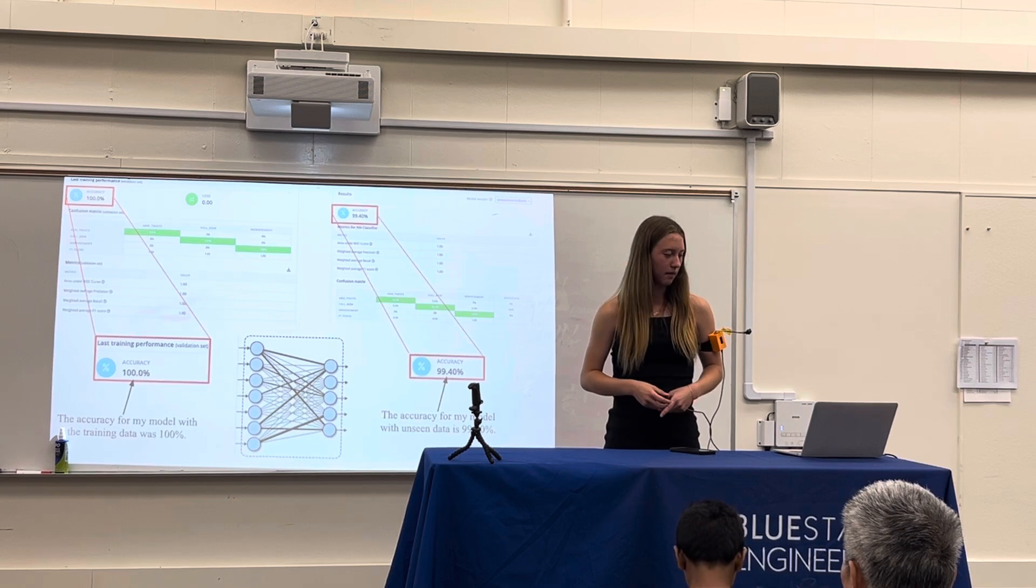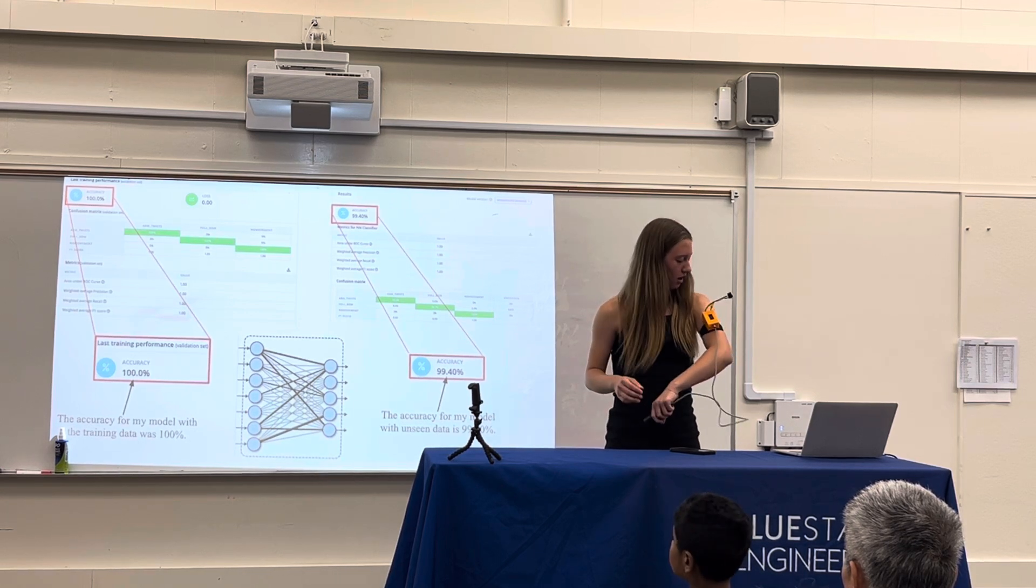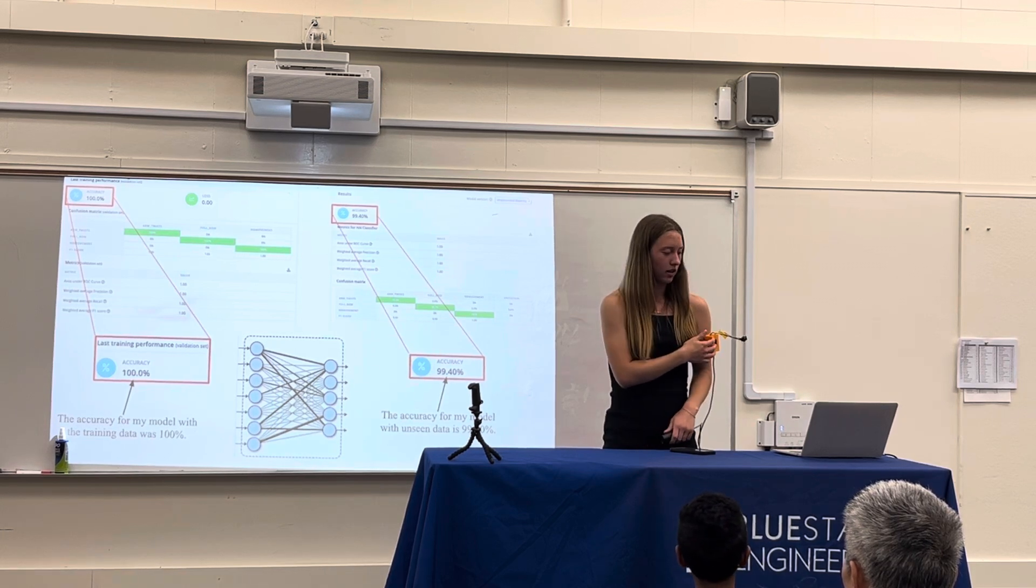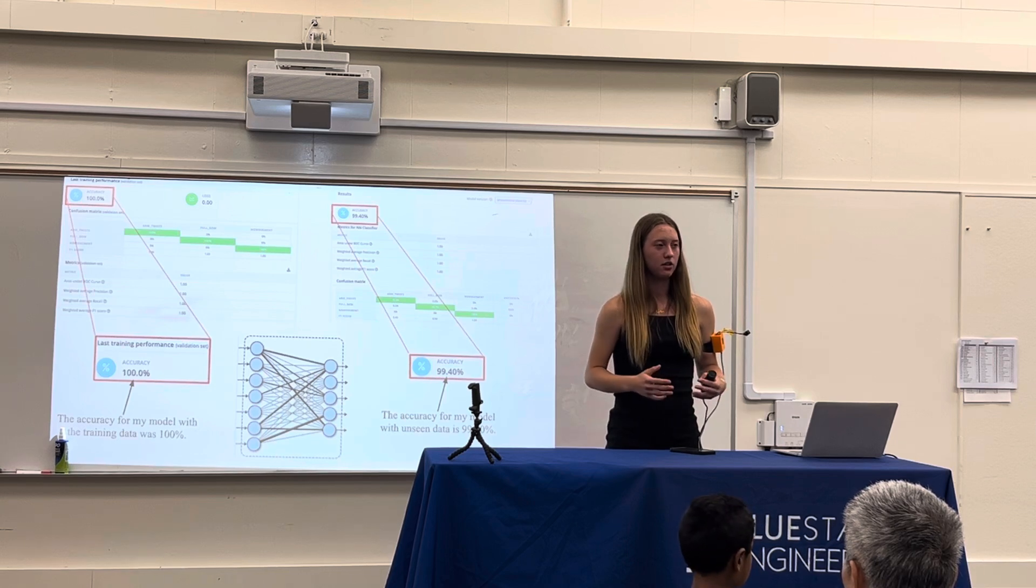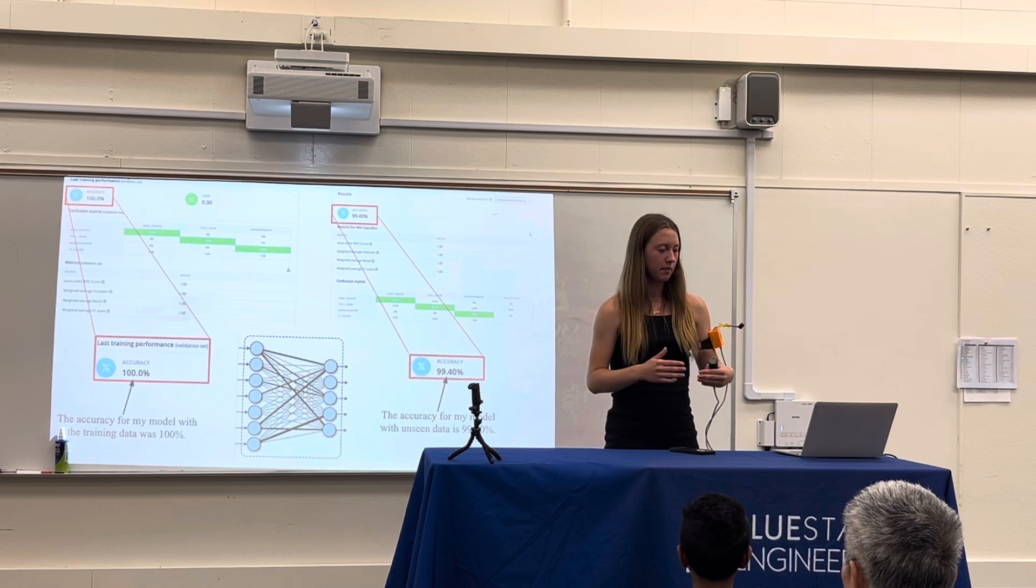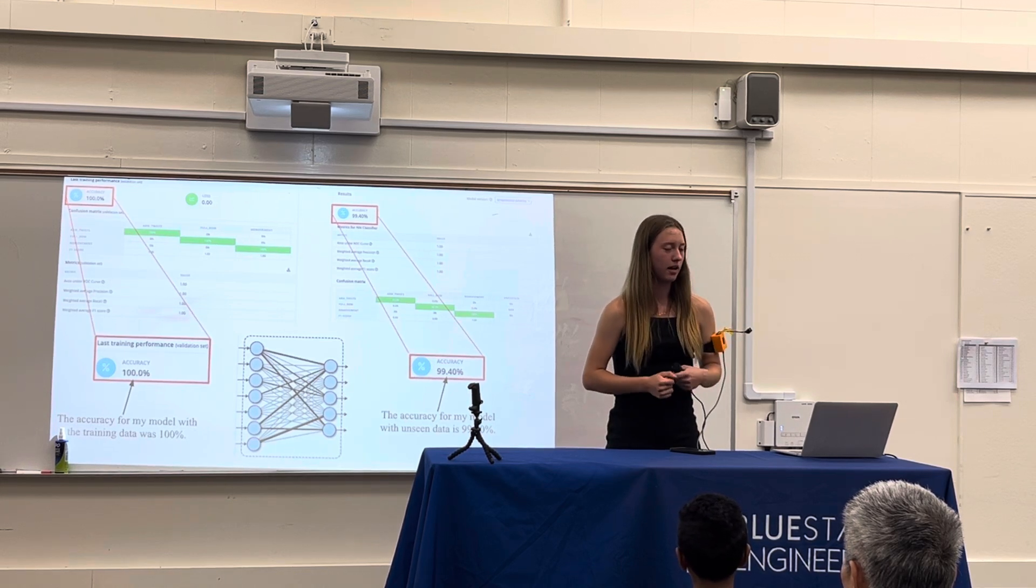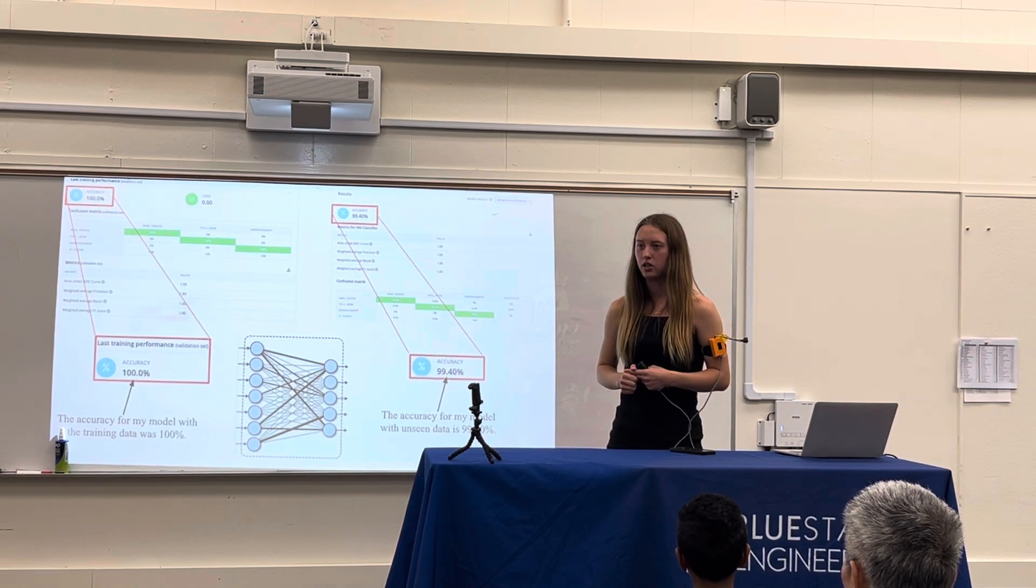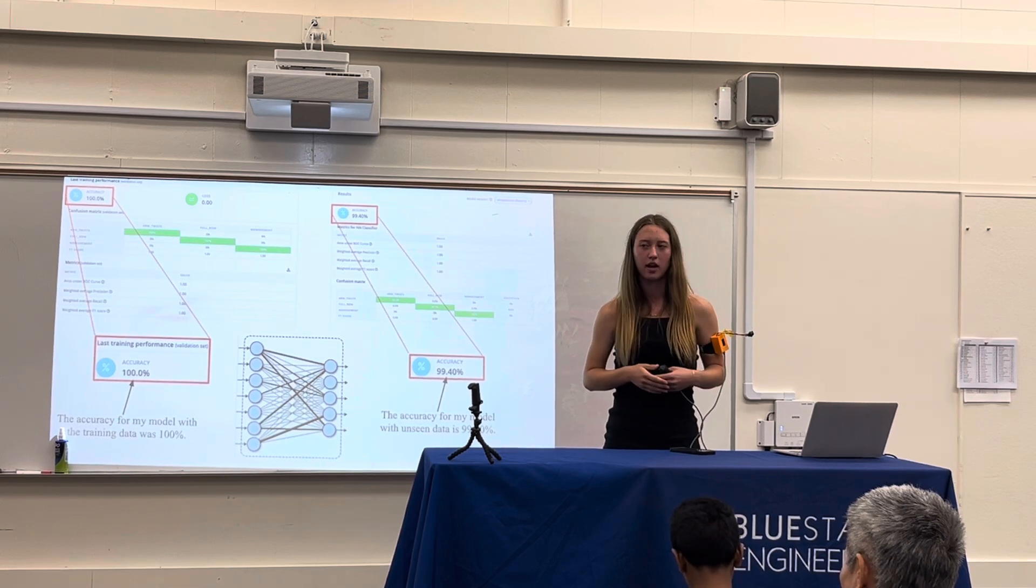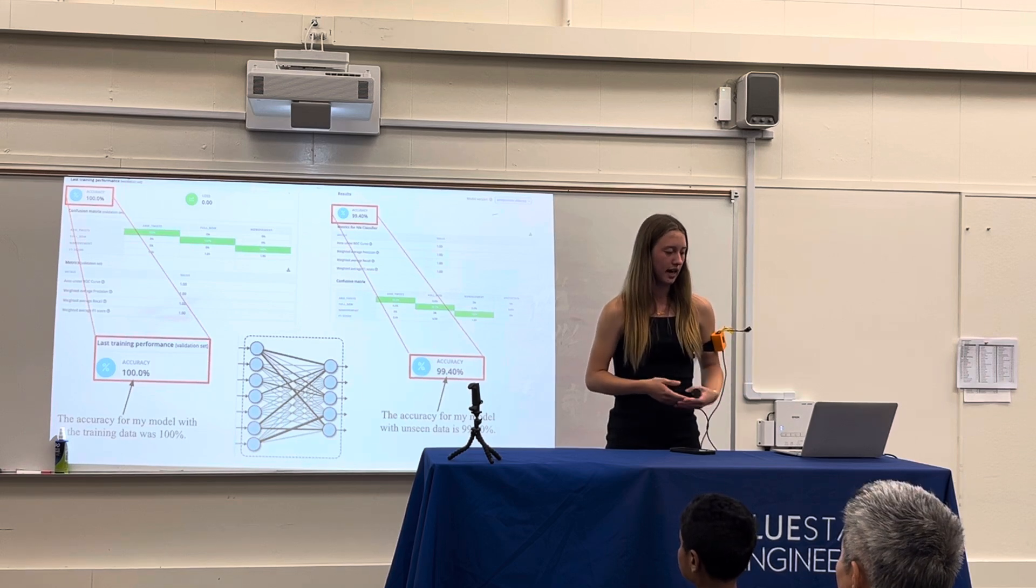Another challenge I had to overcome was with displaying the probabilities on my OLED display. In order to overcome this problem, I had to chunk my code out and make sure that each separate line of code worked. So first I would project Hello World onto my OLED screen, and then I would try to project the probabilities. And if I tweaked something in the code and it suddenly stopped working, I went back to Hello World and tried to get that to work first.